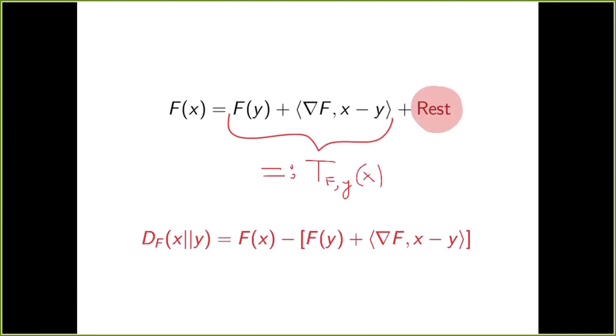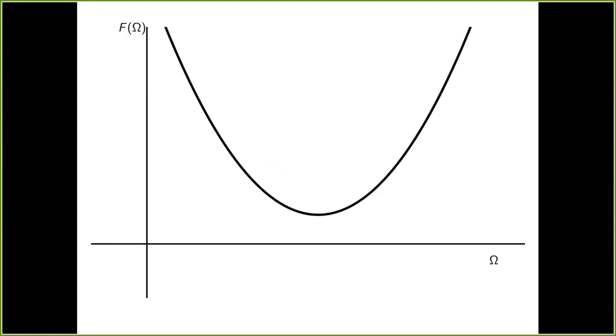And this value can be easily illustrated. So in the graph of f, consider the graphs of two points x and y, and then draw the graph of the linear approximation T_f_y, which in the picture is just the tangent space to the graph of f at the graph of y. And then the Bregman divergence is the vertical distance from the graph of f at x to this tangent space.